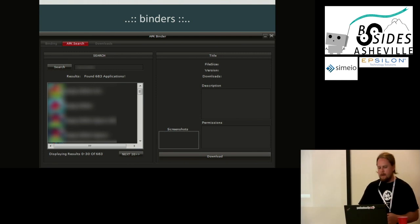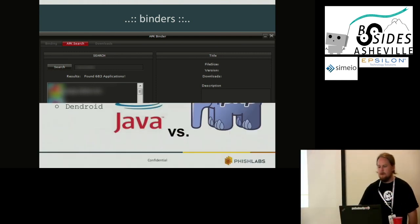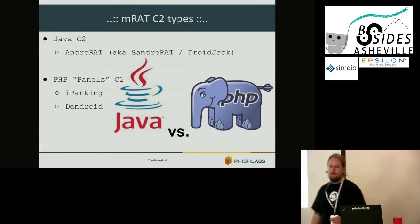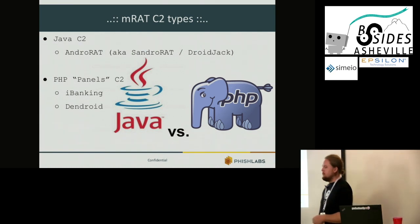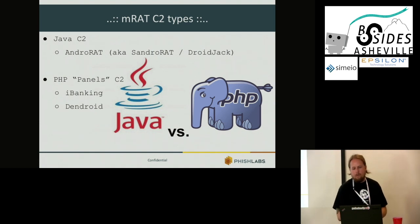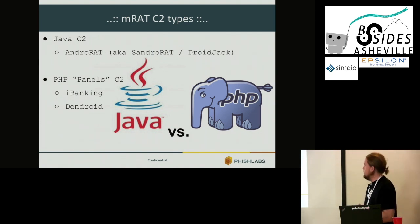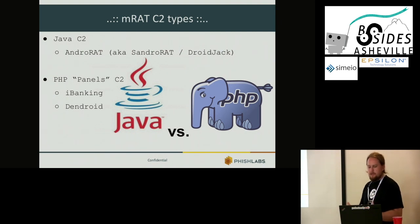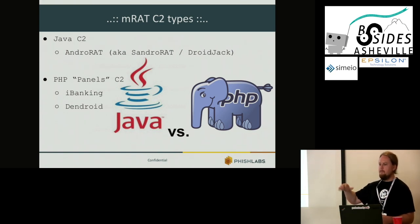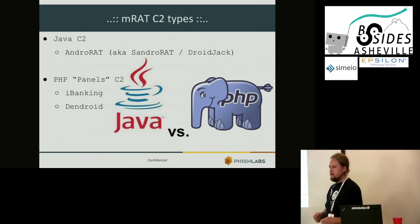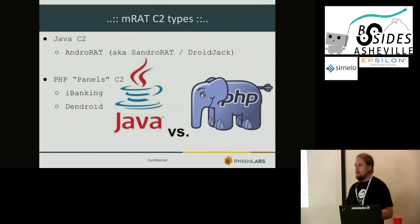Let's talk about the two different C2 types. Just like PC remote access Trojans, I break these into the same categories: the Java C2, which runs on a PC — one of the families being AndroRAT, also known as Sandro Rat and DroidJack. The other C2 type, the one I like to find vulnerabilities in, is the PHP panel variety. These are hosted on compromised VPSs or websites. Two families in this category are iBanking and Dendroid.